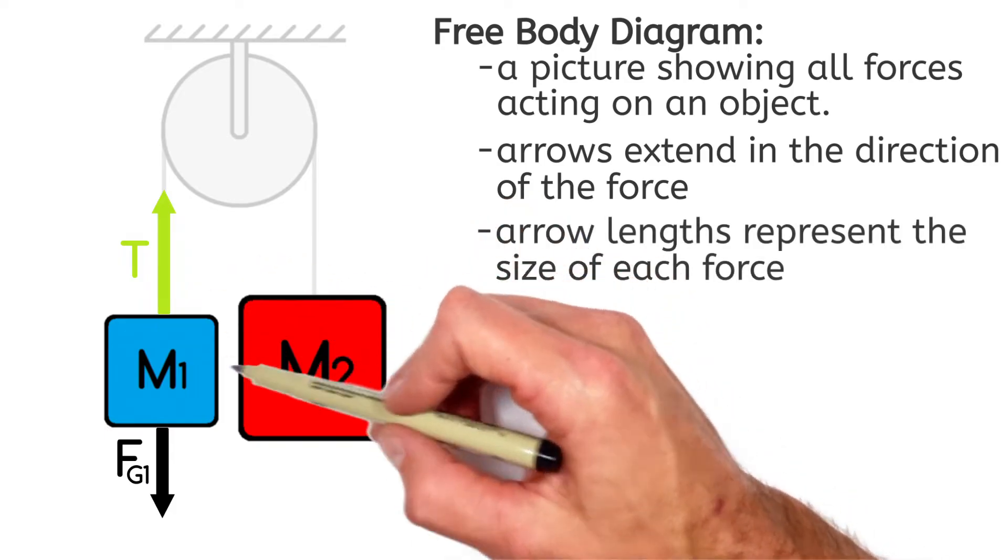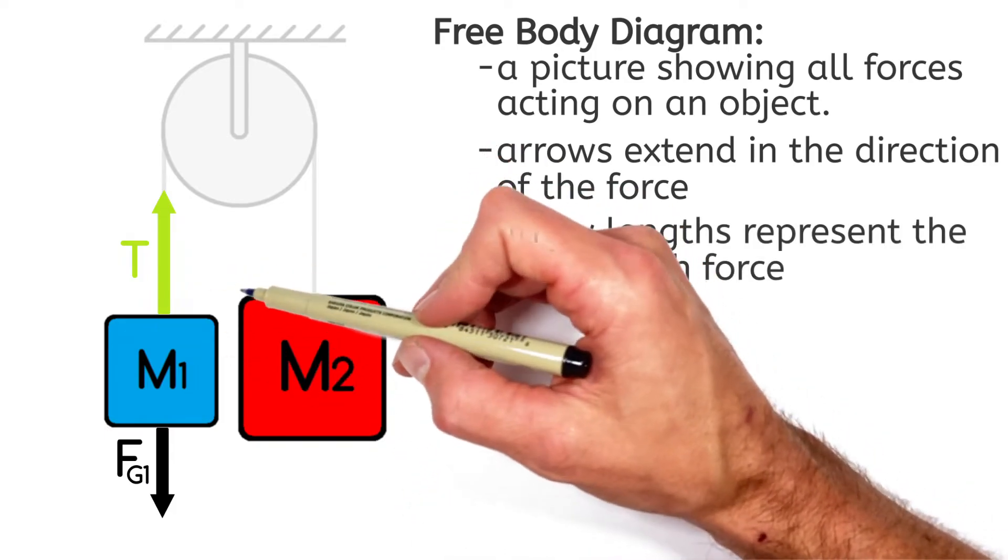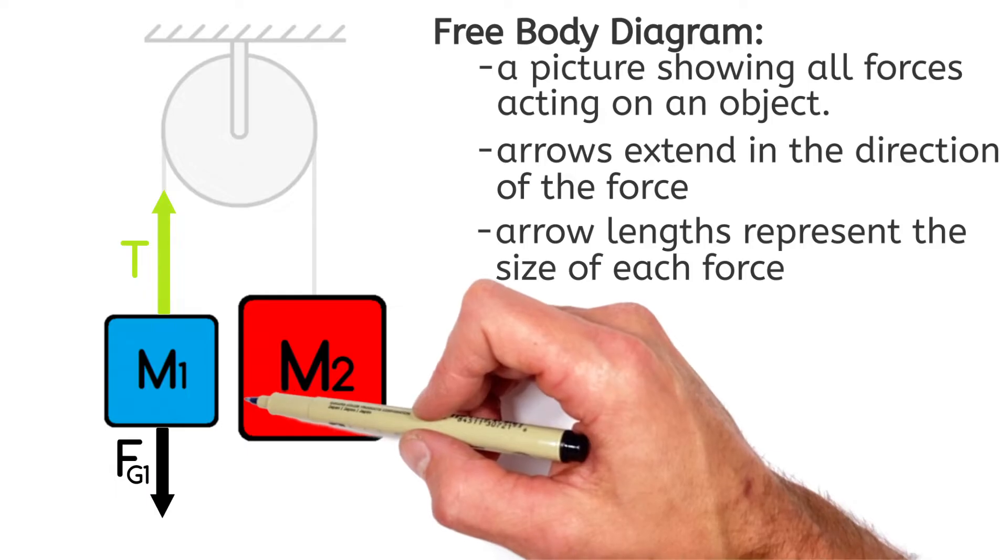Now typically in a free body diagram you want to show a large force with a large arrow and a small force with a smaller arrow.